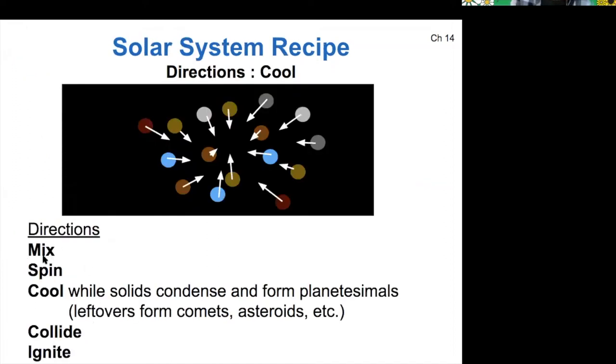Once we have our ingredients mixed together, we've spun up the solar system. It's now a flat disk, and now we're going to let it cool. Solids will now condense out of the solar system where it is cool enough for them to do so, and they will form planetesimals over time as they stick together. We've talked about this process quite a bit before.